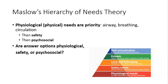We use Maslow's hierarchy of needs with our prioritization nursing questions. I simplify it into three categories. Physiological or physical needs are your top priority — because if you don't have an airway, if you don't have circulation, you're not breathing, and the other things aren't going to matter. Second priority is safety, and the third is psychosocial — the fluffier feelings like love and belonging, self-esteem, self-image. Those would be psychosocial type answer options.